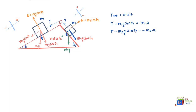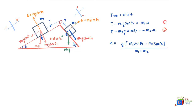Label these as equation 1 and equation 2. Subtracting equation 2 from equation 1, tension T cancels out, and solving for A gives: A equals G times (M2 sine theta2 minus M1 sine theta1) divided by (M1 plus M2).